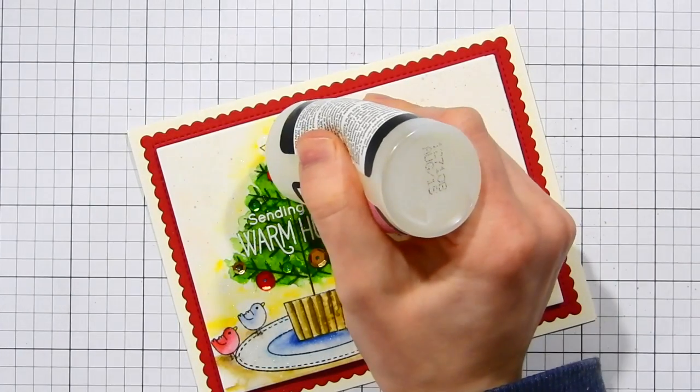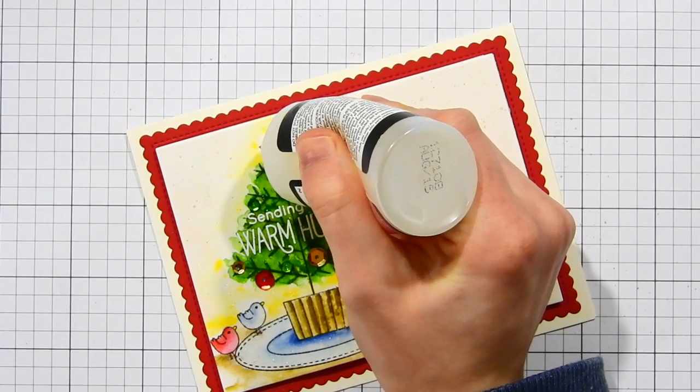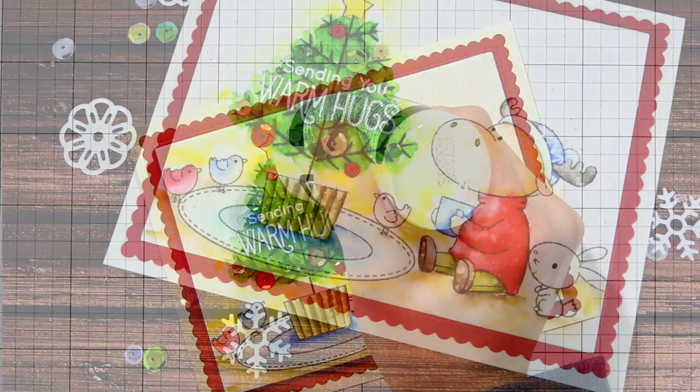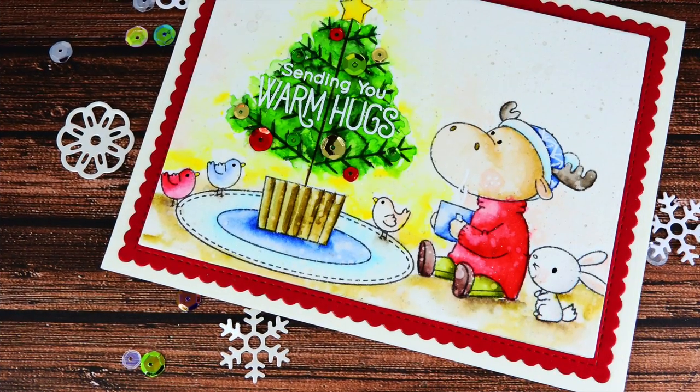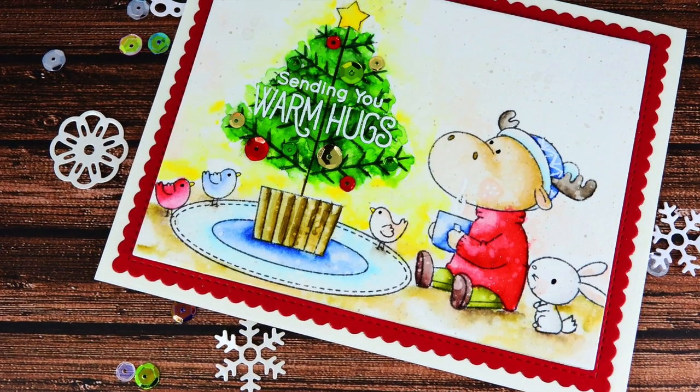I'm also going to add some dimension by applying some glossy accents onto the star and then for a final bit of embellishing I use the Sakura Black Glaze pen to add some details to the eyes of the critters.